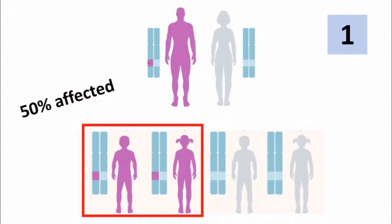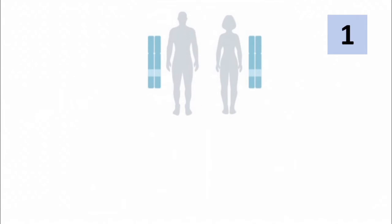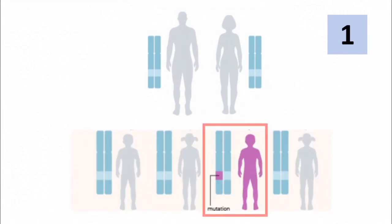In this pattern of inheritance, both males and females are equally affected. Usually, 50% of the offspring have probability of being affected. Again, both parents may be normal and the offspring can get a new mutation. This is another way of having autosomal dominant disorder. Now, we will see some examples.